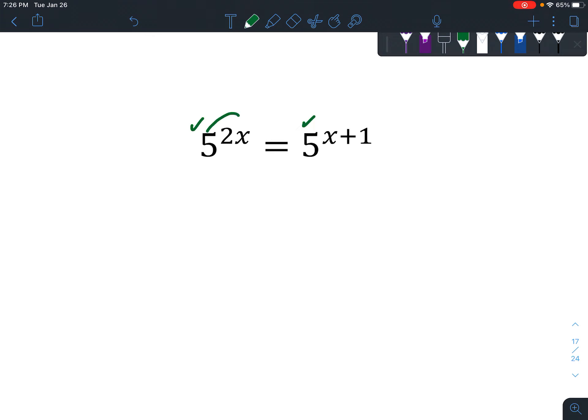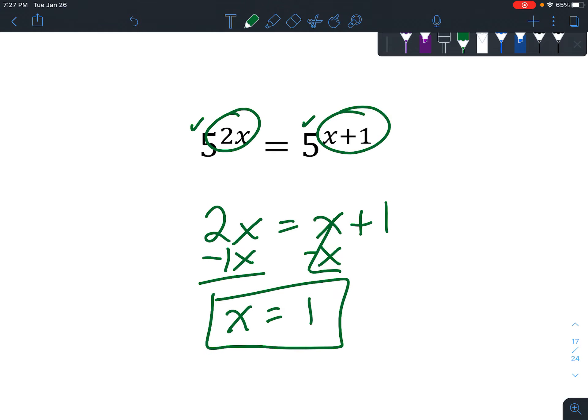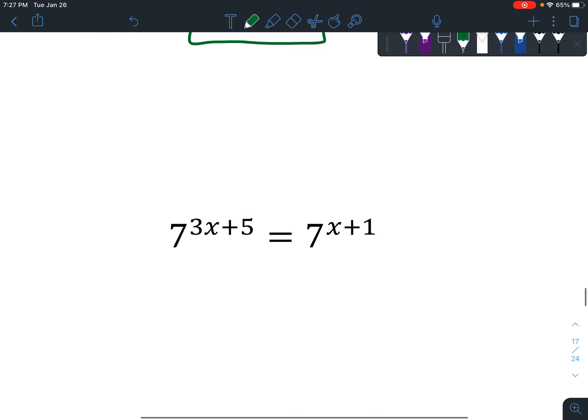Same base. Okay, so we've got 2X = X + 1. If you have a variable on each side, make sure you subtract to get X = 1.